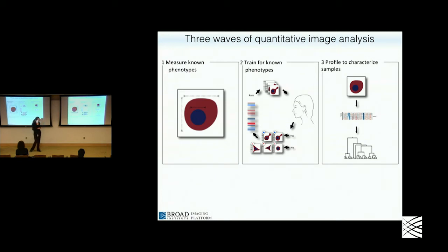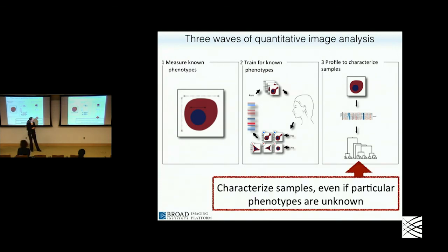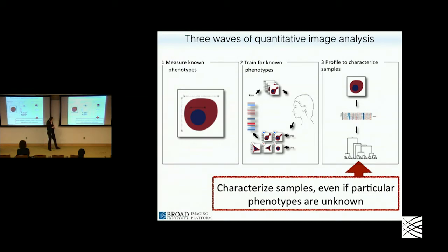I'm about to switch gears to a set of experiments that you wouldn't think would involve imaging. Now we're going to talk about a new kind of experiment that may be particularly relevant to this audience: characterizing samples even if you don't know what phenotypes you're looking for. You have a lot of samples, you wish you could group them or tell how they're different from each other, but you're not sure how you'll be able to do that.